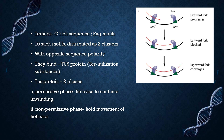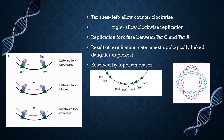These clusters bind Tus protein, that is terminator utilization substance. Tus protein has a permissive face to the replication fork that allows helicase to continue unwinding, and also a non-permissive face that halts the movement of helicase. Ter sites located to the left of the terminator region bind Tus proteins in a way that allows the counter-clockwise replication fork to pass through while blocking the clockwise replication fork.